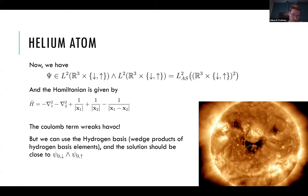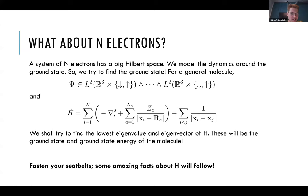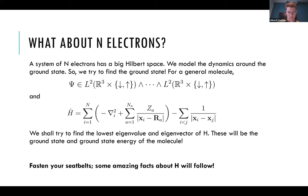Here I just denote the spin with an arrow. So for n electrons you have this big anti-symmetric square-integrable Hilbert space — that's where your wave function lives — and you have this big Hamiltonian. People have been looking at this Hamiltonian for a while and there are some nice results. First of all, it's clear that this general Hamiltonian H is a self-adjoint operator.